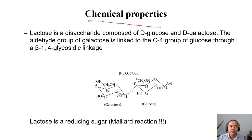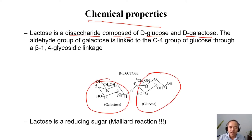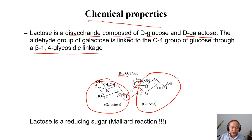We discuss the chemical properties of lactose. It is a disaccharide composed of D-glucose and D-galactose. You have one moiety, galactose, and the other one, glucose. They are linked together through what we call a beta 1-4 glycosidic linkage — position 1 and position 4 link together. Lactose is a reducing sugar.